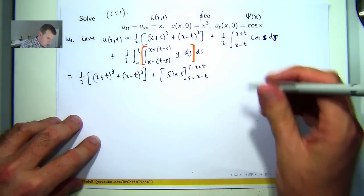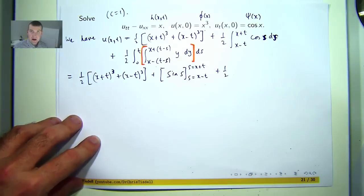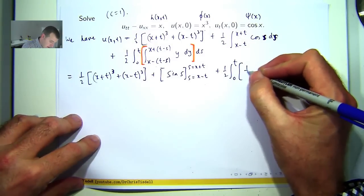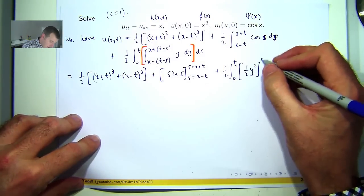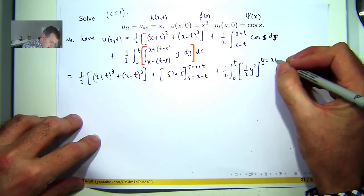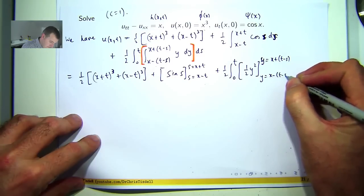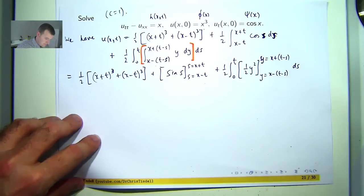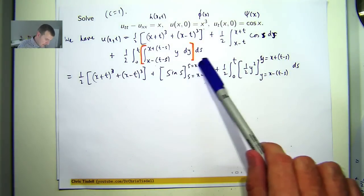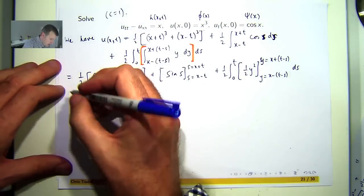Okay, and now this integral here. So if I integrate y with respect to y, I'll get a half y squared. Okay, so if I now plug in s equals x plus t, s equals x minus t, and these things in for y, I should get the following.